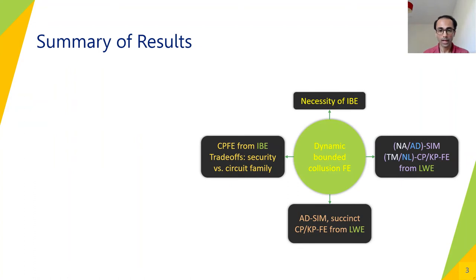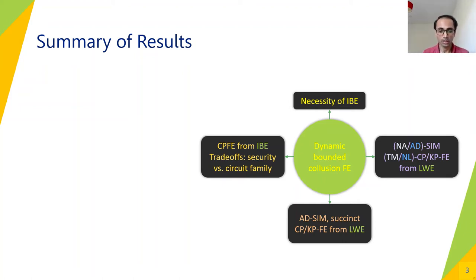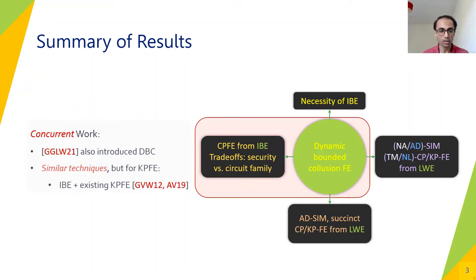Overall, we introduced the stronger notion of dynamic bounded collusion for functional encryption. We built ciphertext policy FE schemes from IBE with various trade-offs of security versus circuit family. We also show that IBE is a necessary assumption for achieving security under the stronger model. Further, we built succinct FE schemes from LWE with stronger security guarantees and FE for Turing machines and NL in both ciphertext and key policy settings from LWE, satisfying dynamic bounded collusion. We note that there is a concurrent work by Garg et al. which also uses IBE and existing KPFE techniques to generically build key policy FE schemes secure in the dynamic bounded collusion model.